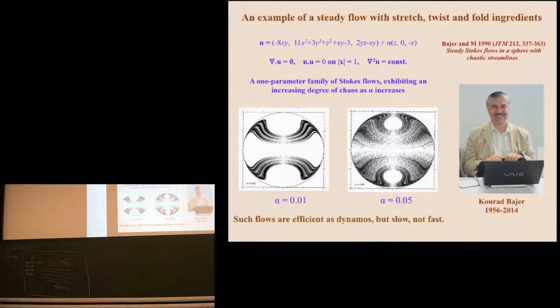It's a one-parameter family of Stokes flows, exhibiting an increasing degree of chaos as alpha increases. The normal component of u is zero on the boundary, but the tangential component is not zero. So it's a flow that is driven by tangential motion on the boundary. Like you might have if you had a droplet of one fluid rising through another fluid.